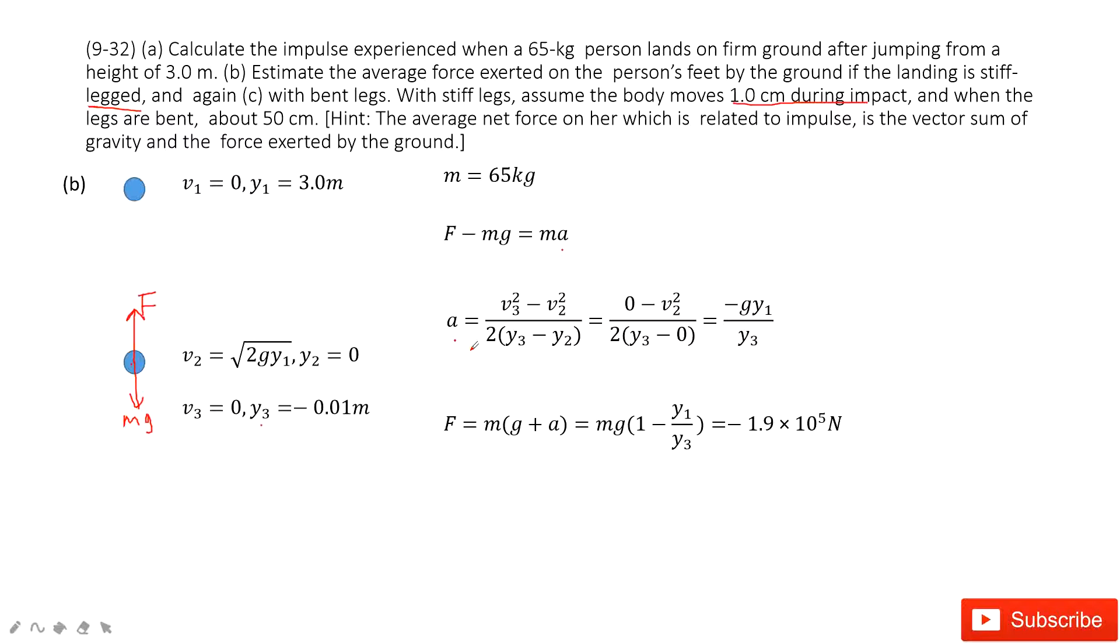And then this acceleration is easy because we know the initial velocity v2, we know v3, we know y2, we know y3. Use our favorite equation, we can get acceleration. Then we can input the acceleration, get the average force. This negative sign tells us the direction for this force.